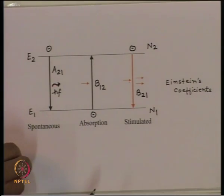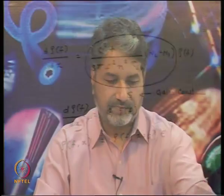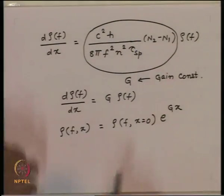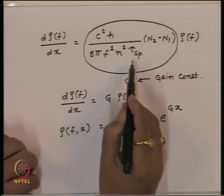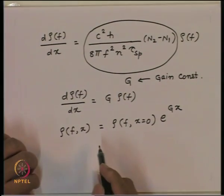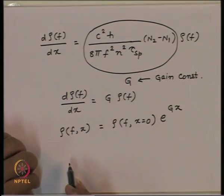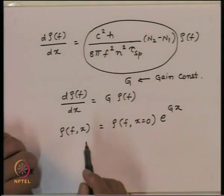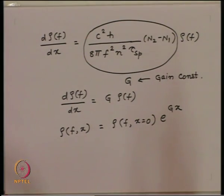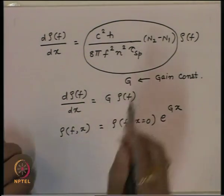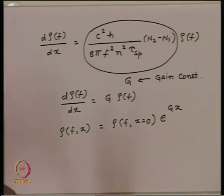Coming to semiconducting material lasers, if we look at the gain coefficient expression, the spontaneous lifetime will become the non-radiative recombination lifetime here. The frequency will depend upon the band gap of the material, and the quantity N2 minus N1 is nothing but the injected carriers in the P-N junction under forward bias condition.